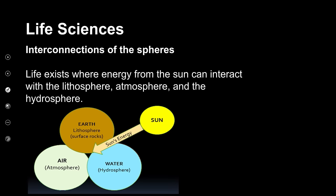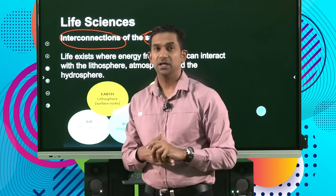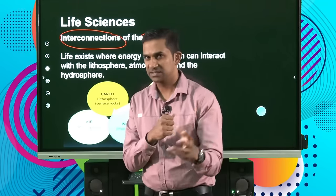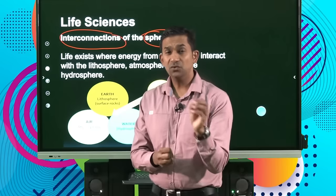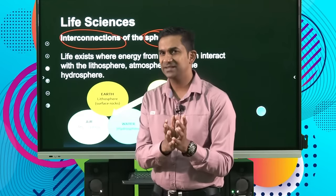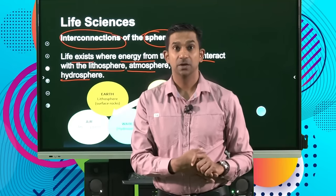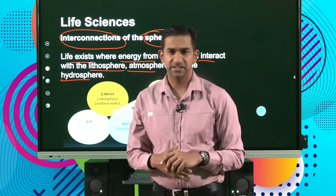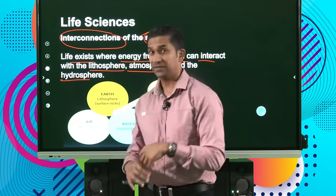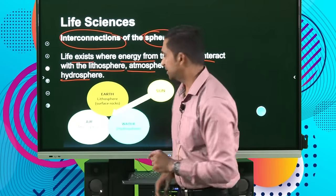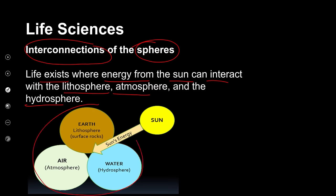Before we get into that, it's important to understand that there is an interconnection between the spheres of life. Life exists in the atmosphere, life forms exist in the lithosphere, as well as life forms existing in the hydrosphere. All of these are interdependent and often depend on each other. Life will exist where energy from the sun can interact with the lithosphere, atmosphere, and the hydrosphere. If we were to take just the atmosphere or just the hydrosphere, those can support life — however, we need to understand the context of all three components collectively supporting life.